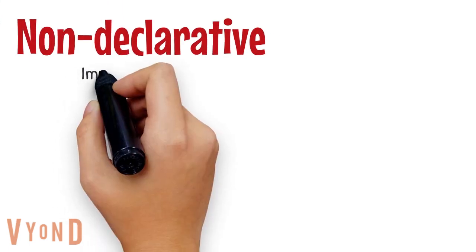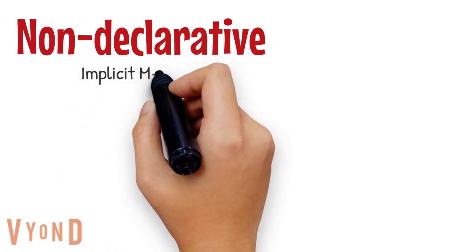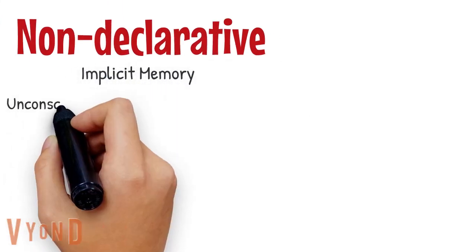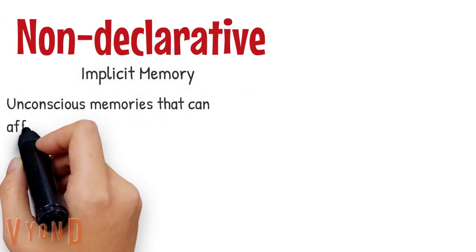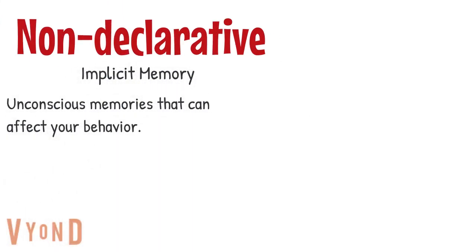In contrast to declarative or explicit memories, non-declarative or implicit memories are unconscious memories — memories for things that you're not aware of that can affect your behavior or what you do.